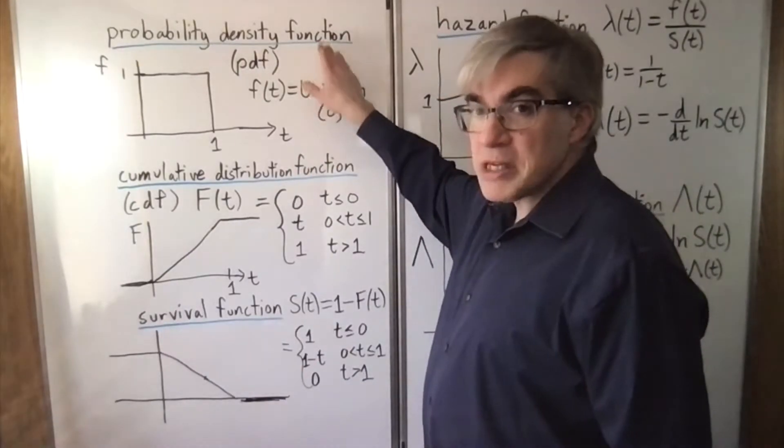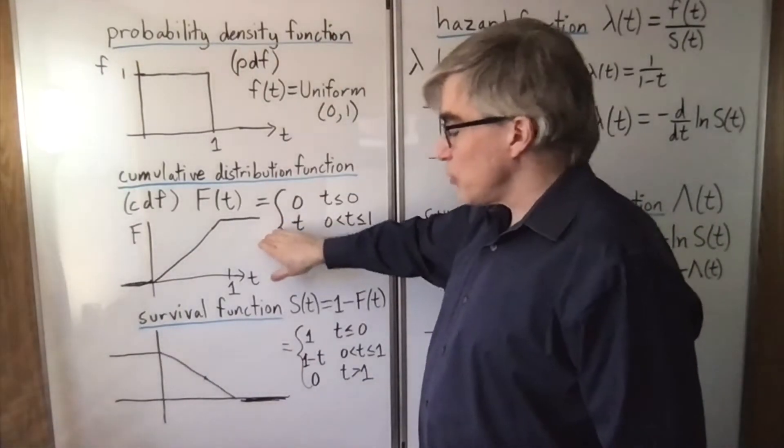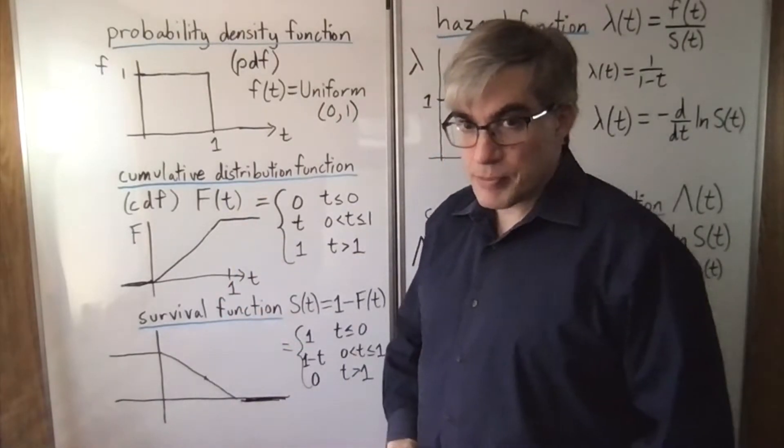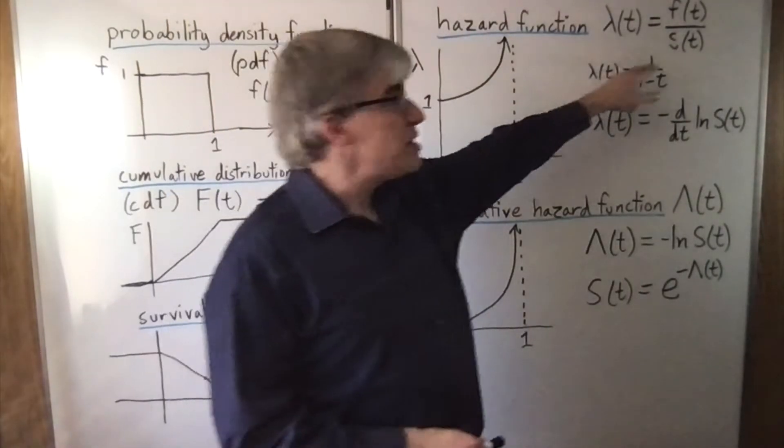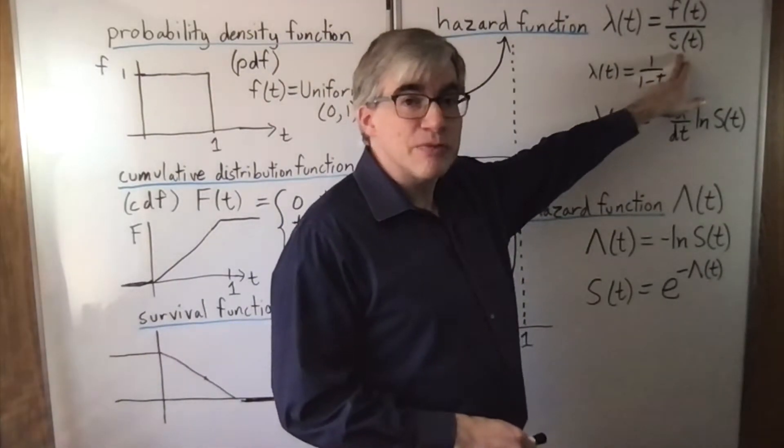So this is a probability per time. This is probability and this is probability. The hazard function, lambda of t, is defined to be the density divided by the survival function.